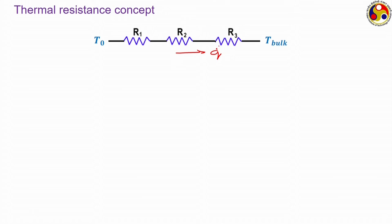R_1 is the fuel thermal resistance and R_2 corresponds to the cladding thermal resistance. Both R_1 and R_2 are conductive resistances since fuel and cladding are generally solid materials — liquid fuel is primarily used in homogeneous reactors, while heterogeneous reactors use solid fuels. R_3 refers to the convective resistance due to convective heat transfer between the cladding outer surface and the bulk of the fluid.